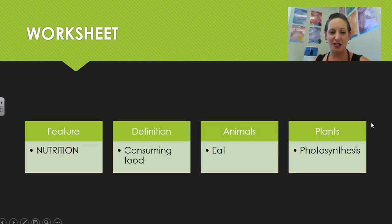On your worksheet, the feature nutrition and the definition of consuming food are already included. And you need to write down that animals eat nutrition and plants produce their own during photosynthesis. So a plant is a producer because it produces its own energy and plants and animals are all consumers because they must eat or consume food to get their energy.